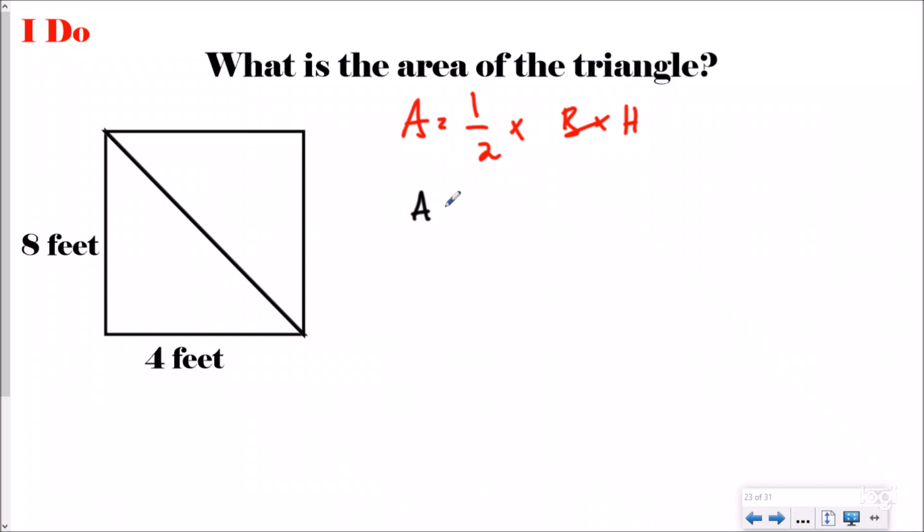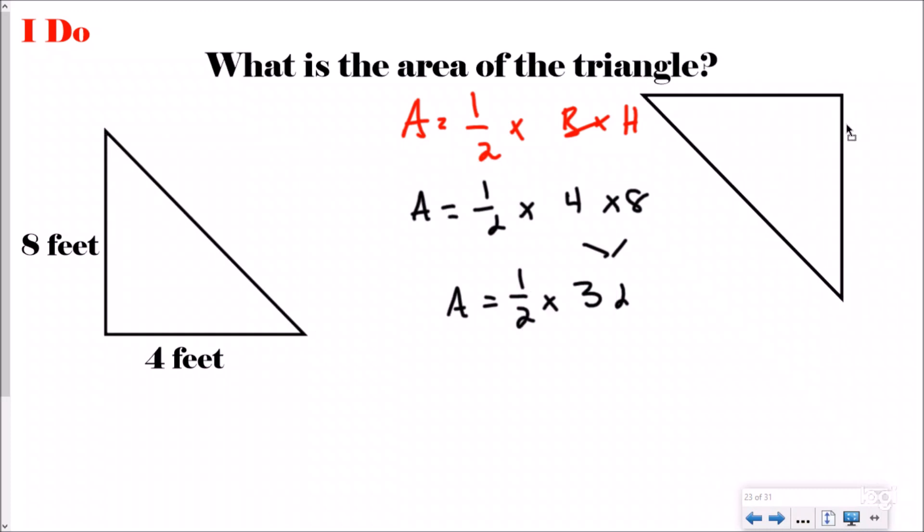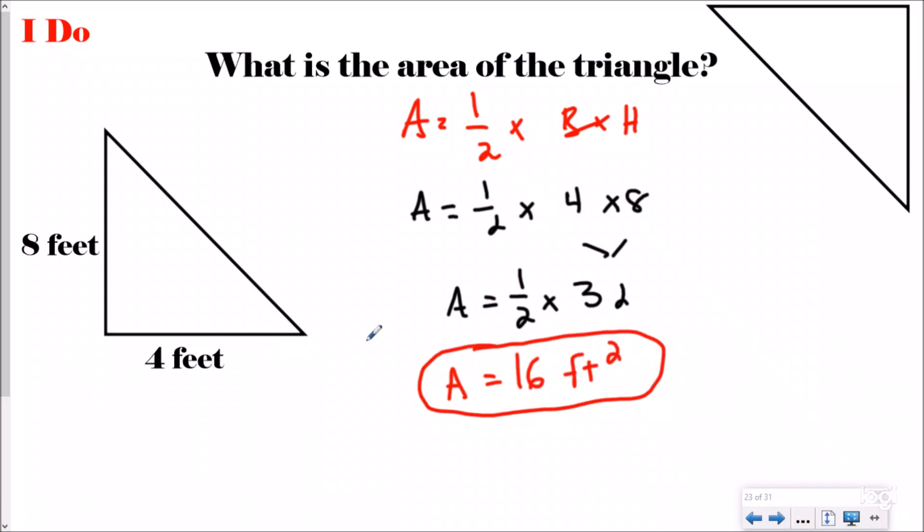So if I really quickly let me fill in my information that I need. So one half times four times eight. And so we know this would be 32. And so the entire area of my imaginary rectangle that I just made is 32 feet squared. But again, I don't want to know the area of the whole rectangle. I want to know the area of the triangle. So if I get rid of this part, I'm taking half of it away. And so now all I'm doing is one half of 32 or one half times 32, which is the same thing as 16 feet squared.